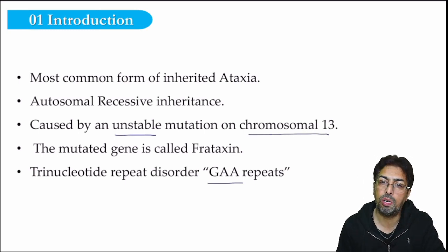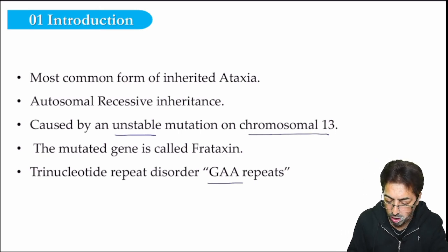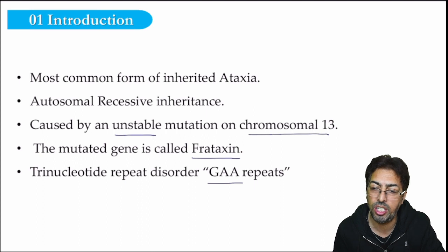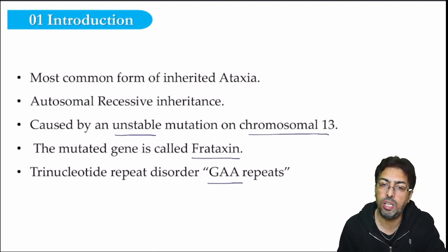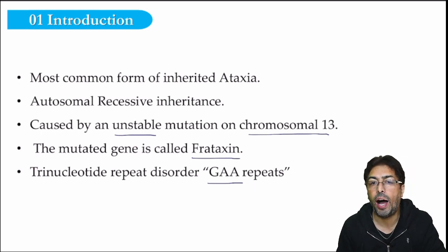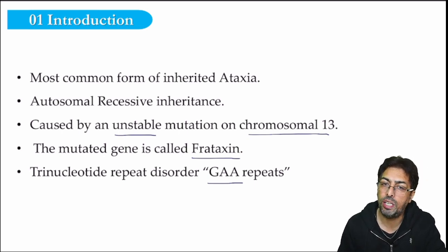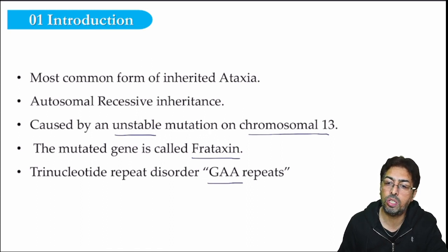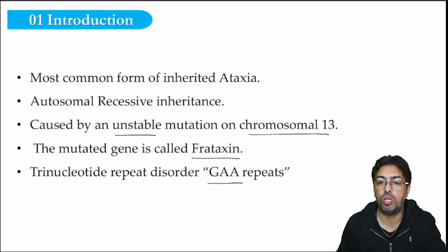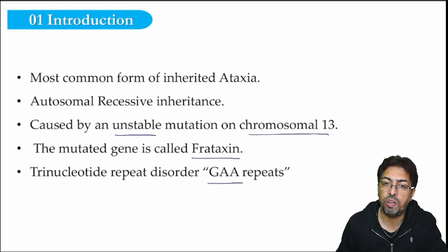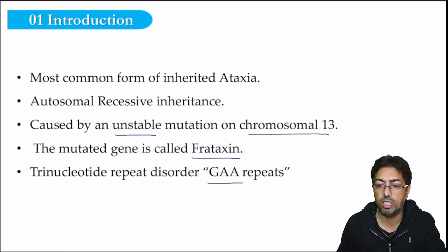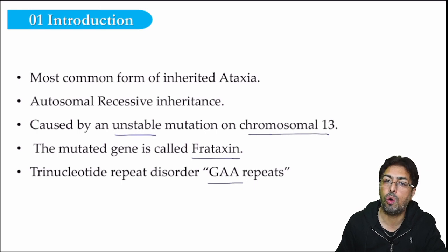An important pathological fact is the gene involved: the frataxin gene. This gene is normally involved in the physiology of iron transport in the cell and mitochondrial function. Any abnormality in frataxin causes altered iron transportation, which leads to mitochondrial dysfunction and increased oxidative injury to the cells. This is the basic pathological mechanism by which the abnormality of the frataxin gene causes this disorder.